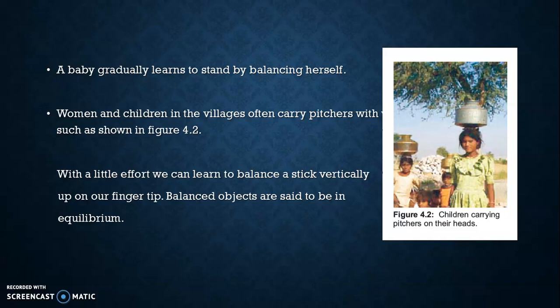A baby gradually learns to stand up by balancing herself. When a child is small, he starts to balance — first he starts to crawl, and through crawling he learns to balance. In figure 4.2, you can see children carrying pitchers on their heads. With a little effort, we can also learn to balance a stick vertically on our fingertip. Balanced objects are said to be in equilibrium.